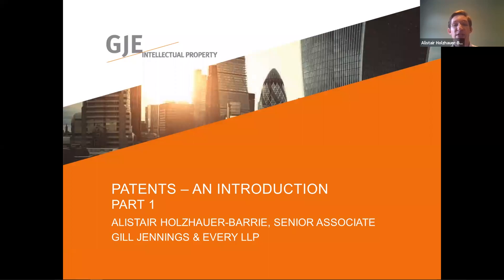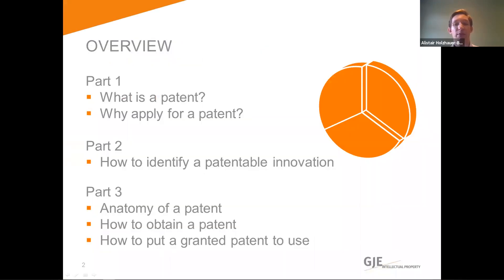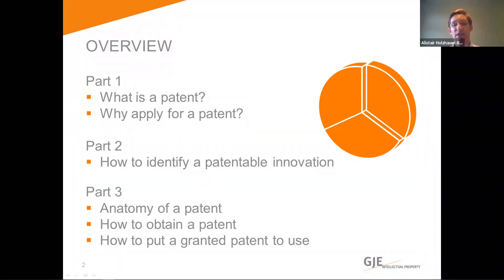We split this patents introduction into three parts, of which this is the first. As an overview of what the three parts will cover: part one will cover what a patent is and why you may wish to apply for a patent. Parts two and three will cover how to identify when innovation may be patentable, what goes into a patent, the process a patent application goes through to get granted, and how the patent can be used once it's granted. Take a look at parts two and three after this if you'd like more information on these points.